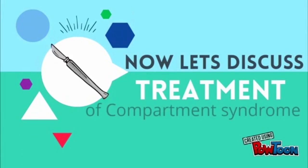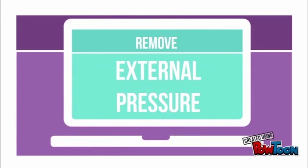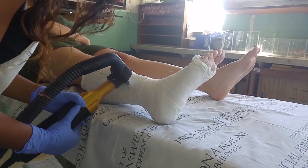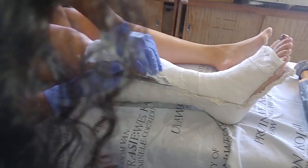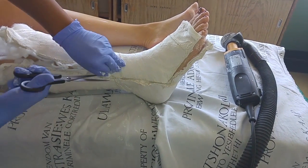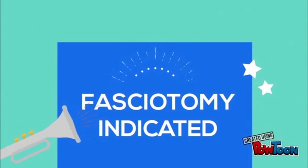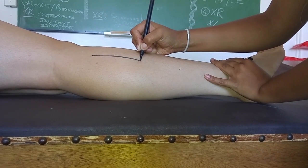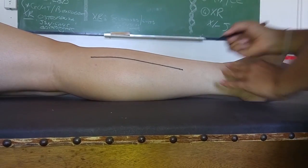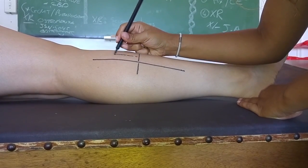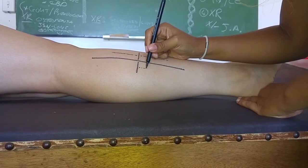Using the tibia as an example, the first step is to remove external pressure by bivalving the POP, splitting it along the lateral and medial aspects, and removing all tight dressings. If after 15 minutes there is no improvement of symptoms, a fasciotomy is indicated, requiring conscious sedation and local anesthetic. All four compartments need to be released surgically. For the anterior and lateral compartment, make a 15 cm incision in the cutaneous layer, then make two horizontal incisions in the fascia and further release each compartment. Take care not to damage the superficial peroneal nerve.